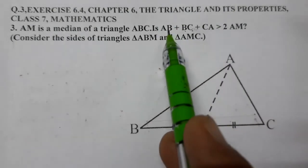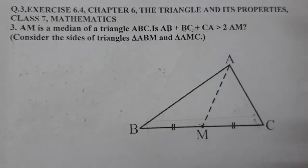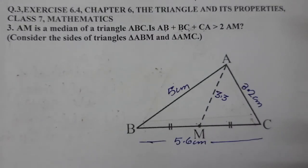Let us measure the sides and let us check. So we will measure AB, BC, AC and AM. Let us measure all the three sides.